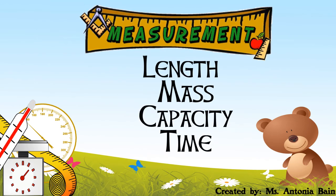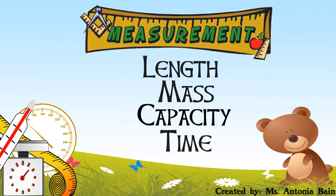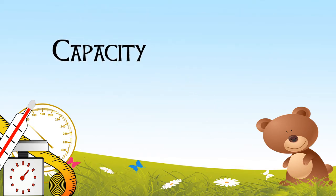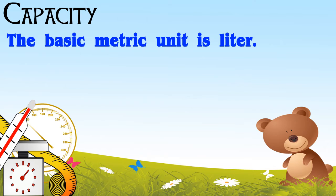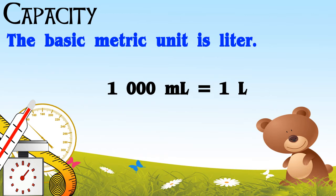Let's look now at the metric units for capacity. The basic metric unit for capacity is the liter. There are 1,000 milliliters in 1 liter and 1,000 liters in 1 kiloliter.